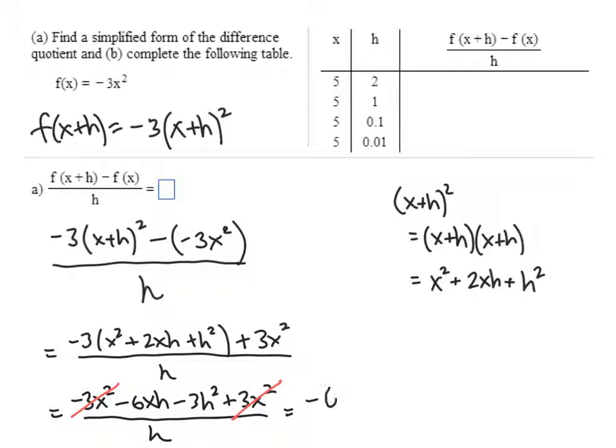And so now on the top, we've got negative 6xh minus 3h squared all divided by h. And when we cancel the h from the top and the bottom, we get negative 6x minus 3h. And that is our answer for part a.